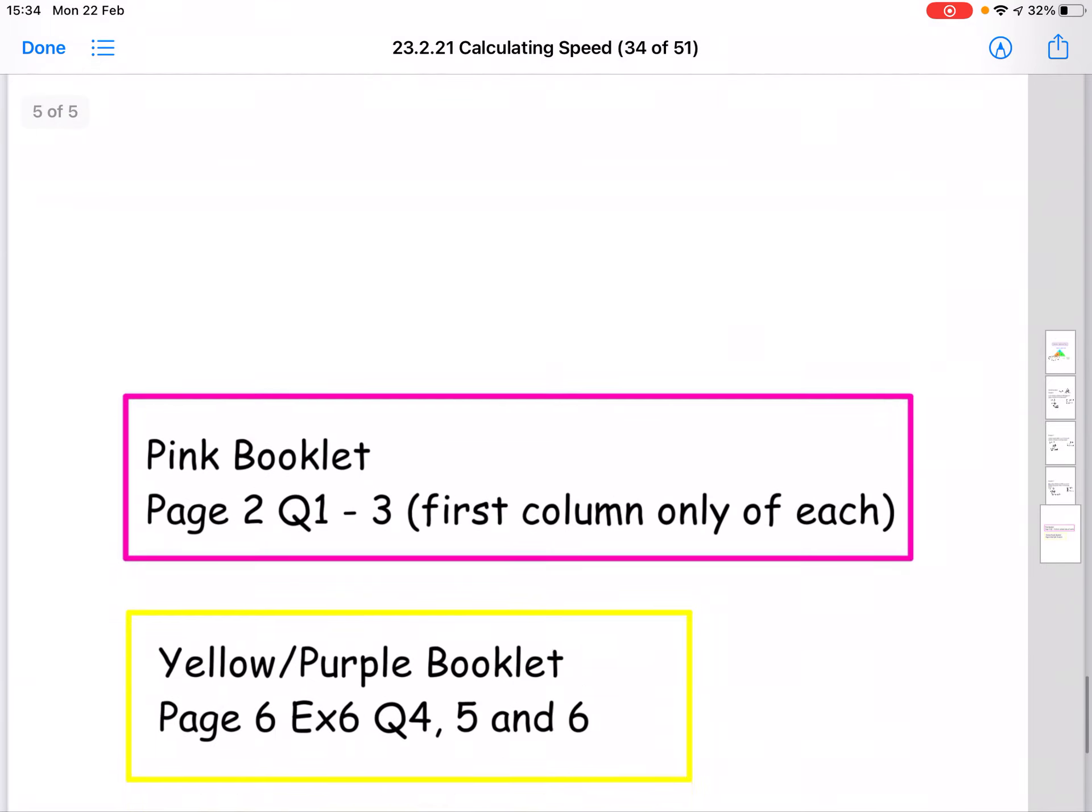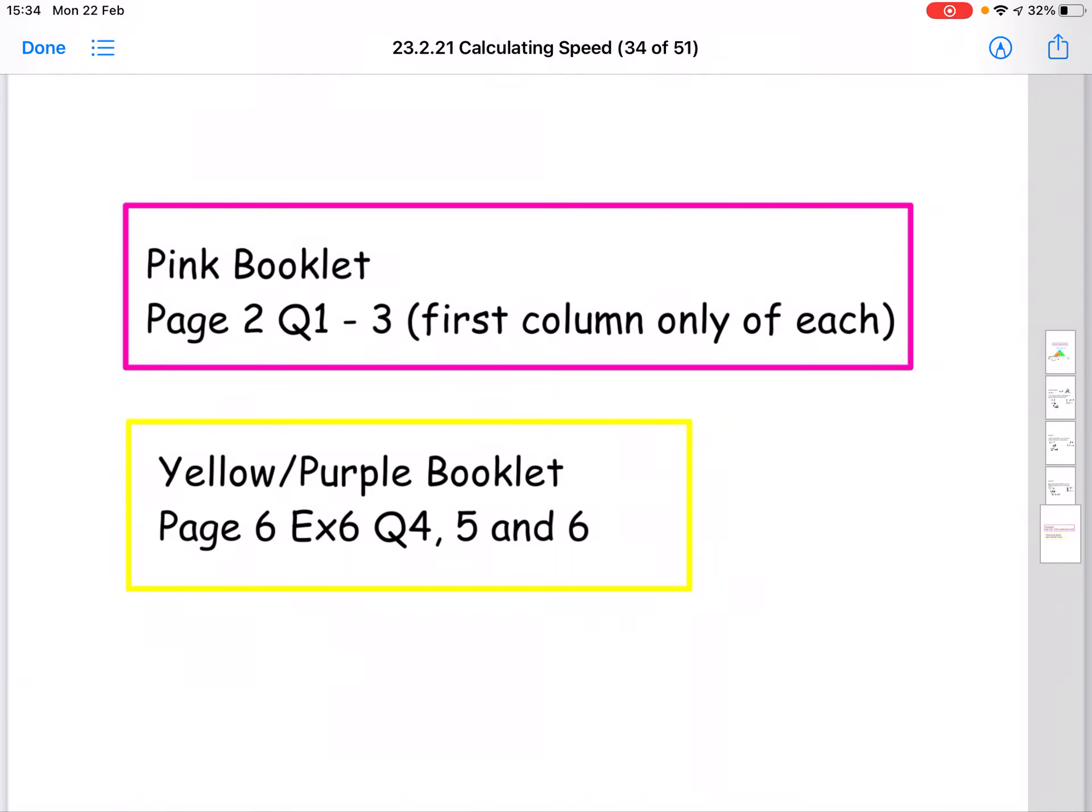So today, what I would like you to try is from the pink booklet, if you're going to do the pink questions, page two, question one, two, and three, just down that first column of each question. And then if you're going to try the yellow purple questions, it is page six, exercise six. And it's going to be question four, five, and six from there.